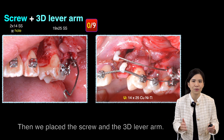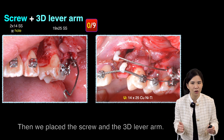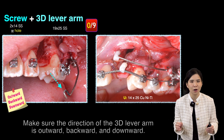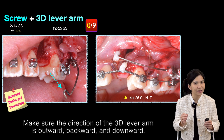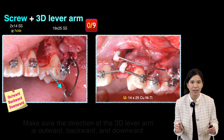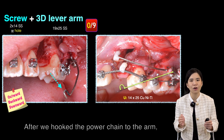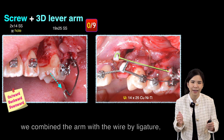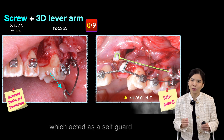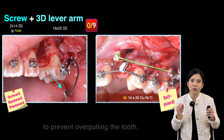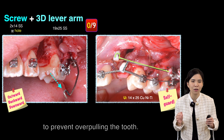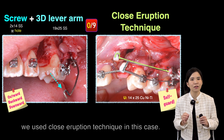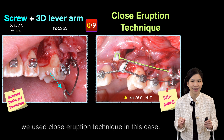We then placed the screw and the 3D lever arm, making sure the direction of the arm is outward, backward, and downward. After hooking the power chain to the arm, we combined the arm with the wire by ligature, which acts as a self-guard to prevent over-pulling the tooth. For suturing, we used the closed eruption technique in this case.